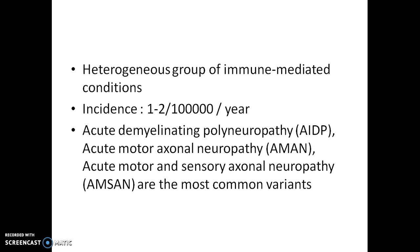The incidence of GBS is 1 to 2 per 100,000 per year, which is very low compared to other diseases. There are a few common types you must be aware of: acute demyelinating polyneuropathy, acute motor axonal neuropathy, and acute motor and sensory axonal neuropathy. These are the most common variants of GBS.